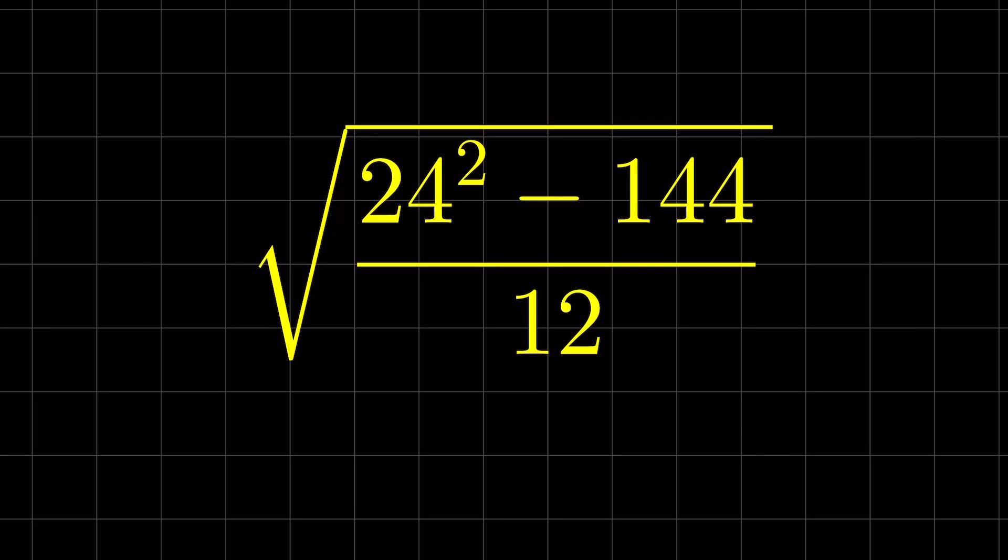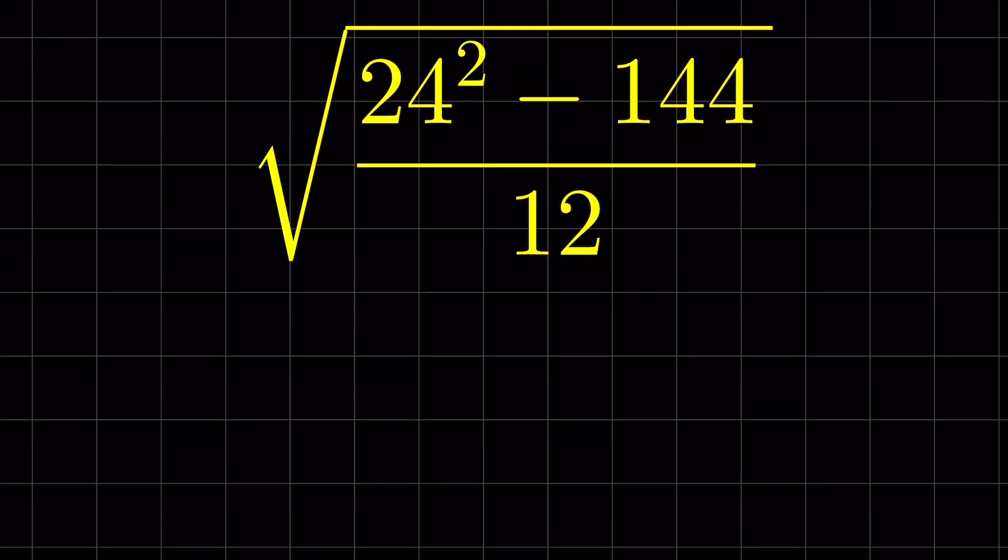The problem is: 24 square minus 144 upon 12, under square root. How to solve this? Now you can solve it using two methods.